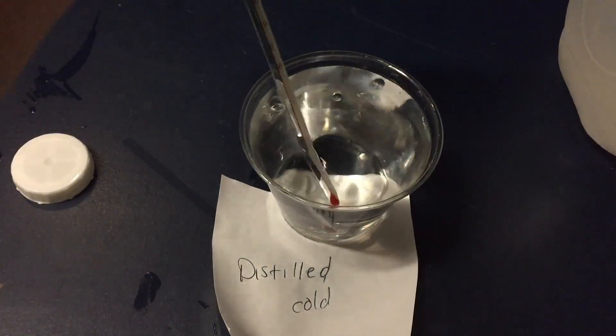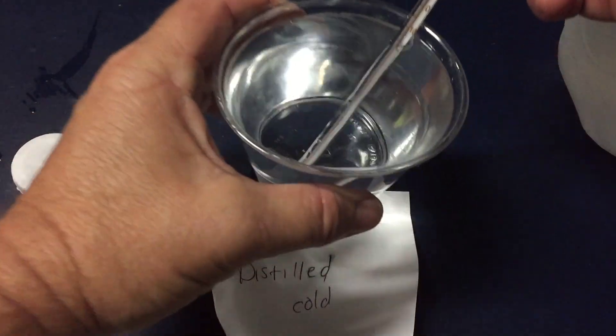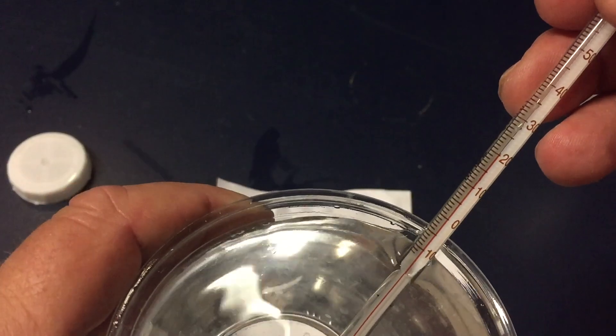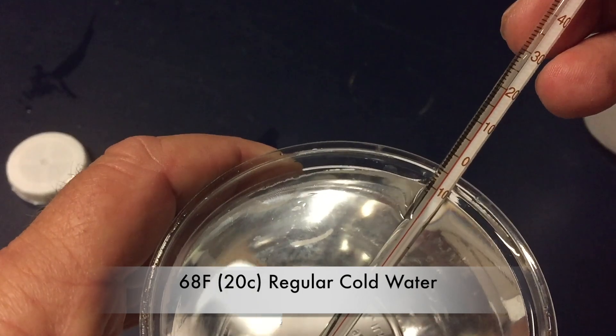As I continue to take the baseline for the distilled cold and hot, which I'll show you as I go, we want to talk about why hot water seems to freeze faster than cold water. And this is known as the Mpemba effect.